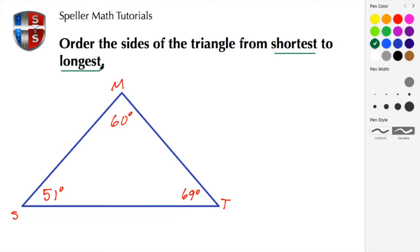To find the shortest side, we need to find the smallest angle. Here the smallest angle is 51 degrees, and that 51 degrees tells us that the opposite side, in this case MT, would be the shortest side.